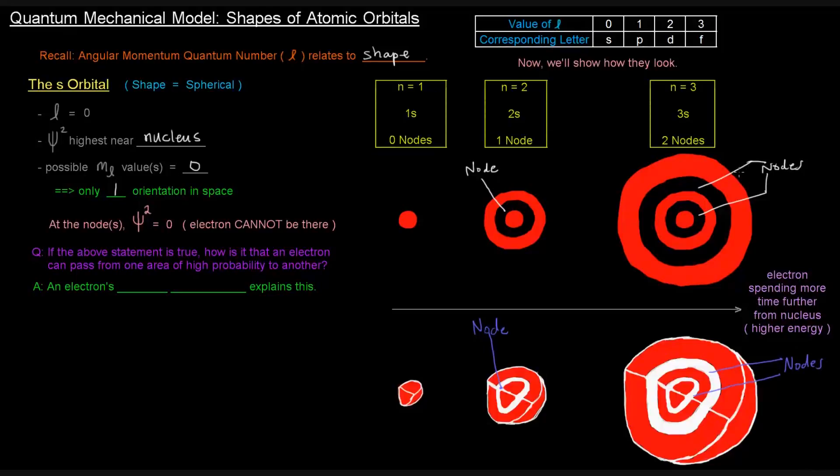So the number of nodes is just n minus 1. Now, at the node, we said the electron cannot be there. So if the above statement is true, how is it that an electron can pass from one area of high probability to another? How can that be?